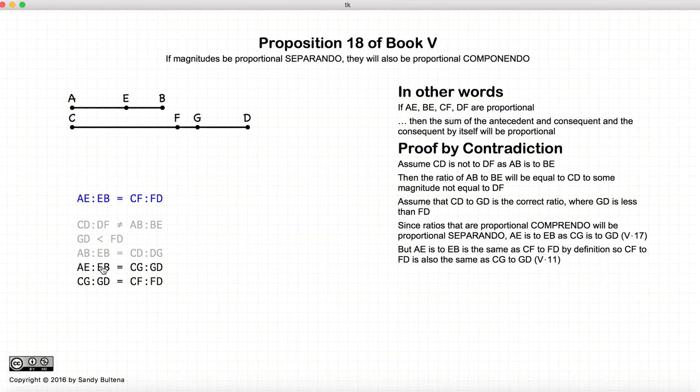But AE to EB is equal to CF to FD. So we have AE to EB here and AE to EB here. So in other words, this ratio and this ratio are also equal. So now we have that CG to GD is equal to CF to FD. This is according to Proposition 11.